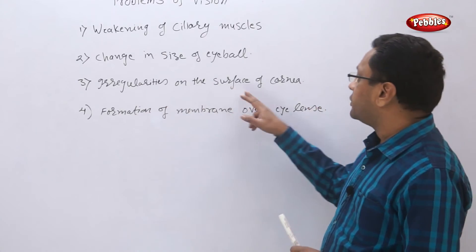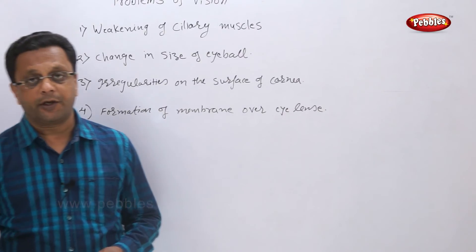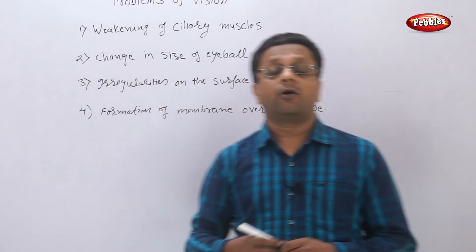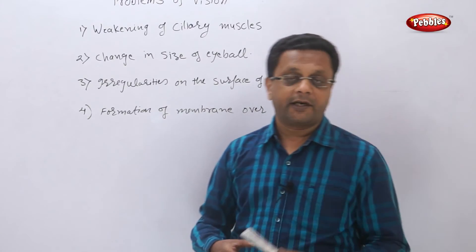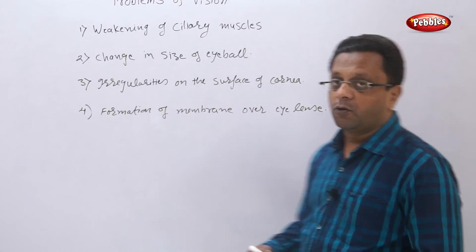If there are irregularities on the surface of cornea - we know that maximum refraction takes place in the cornea - if there are irregularities, the refraction is not proper and you may get problems of vision.